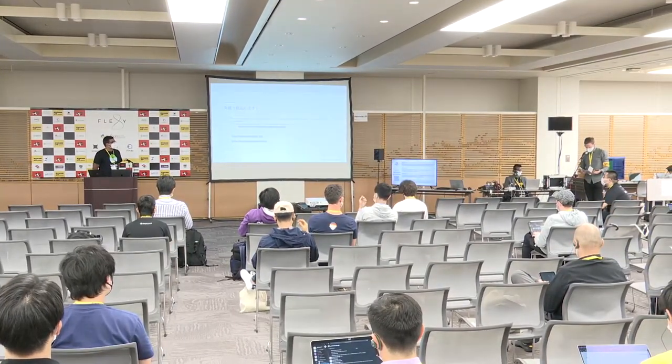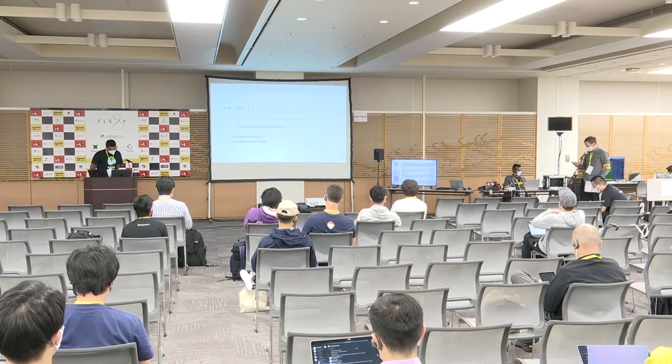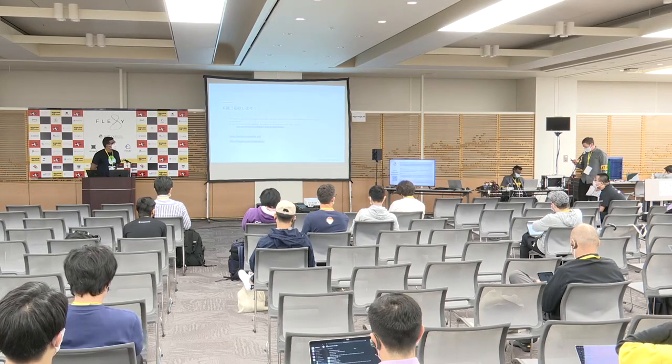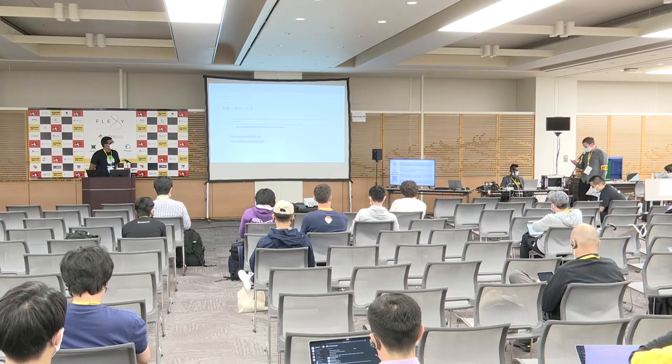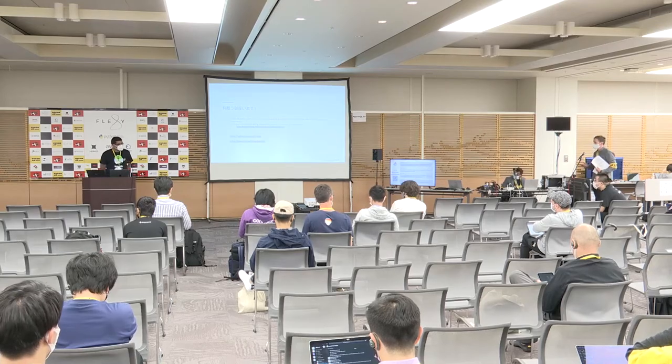Thank you very much for your presentation. We have a few questions from Slido. First: graph algorithms can be compute intensive — how does NetworkX scale, and is there any significant difference between using or not using NumPy and SciPy? NetworkX does not scale that well — scaling means you need a bigger machine, more RAM, better processors. One of my projects is building a dispatch system that would allow better scaling. But right now, if you want good scaling and you have GPUs, go to CuGraph.